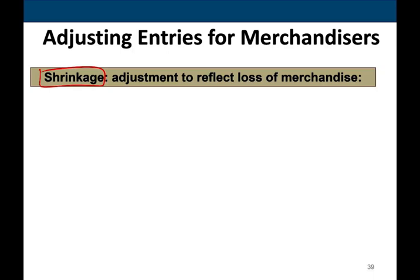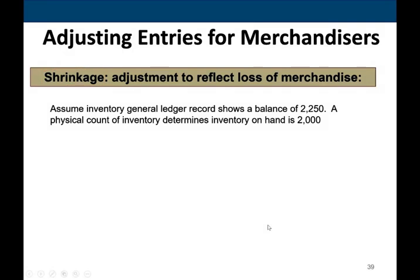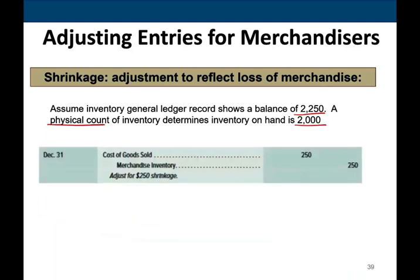We need to count our inventory, and when we count it we need to inspect it to make sure it's still in saleable condition. If it's not there, we write it down and make the proper adjustment. Assume the inventory general ledger shows a balance of $2,250, but a physical count determines inventory on hand is $2,000. The computer shows $2,250, but the actual physical count shows only $2,000 — meaning $250 went missing. We must record an adjusting entry to reduce inventory and book that loss.